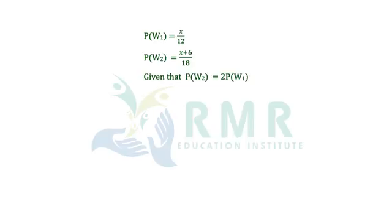Given that probability of W2 equals 2 times probability of W1, because drawing a white ball will be twice that of the first condition. We substitute the probability values: X plus 6 by 18 equals 2 times X by 12. After solving this, we get X equals 3.